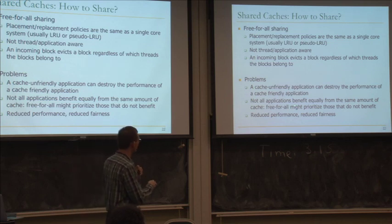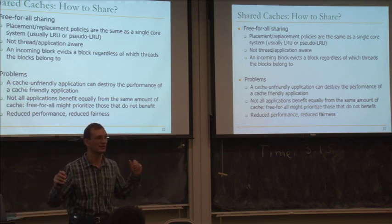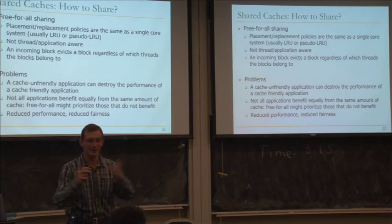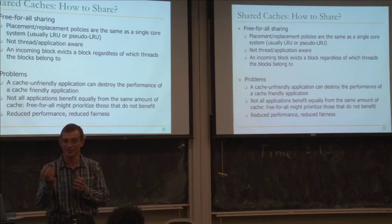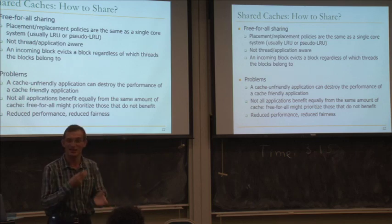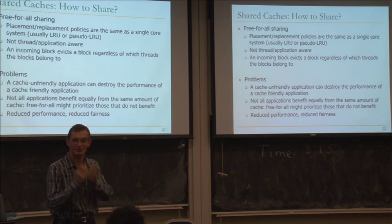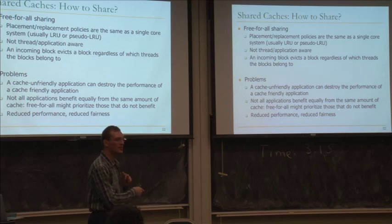One cache-sharing option is free-for-all: don't modify placement or replacement policies, use LRU or random replacement. This is not thread-aware - an incoming block evicts a block regardless of which thread it belongs to. A cache-unfriendly application can destroy a cache-friendly application's performance. Even two cache-friendly applications can interfere if one brings in much more data. Not all applications benefit equally from the same cache amount, and LRU is unaware of that. This leads to reduced performance and fairness.